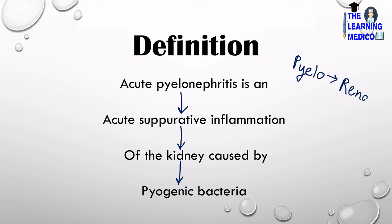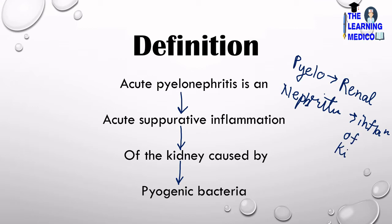Nephritis means inflammation of kidneys. So what is acute pyelonephritis? Acute suppurative inflammation of the kidneys. And the cause is pyogenic bacteria — pyogenic bacteria is the infection-causing bacteria.